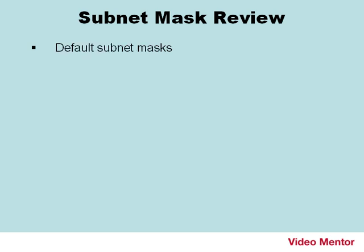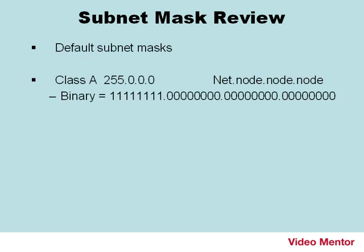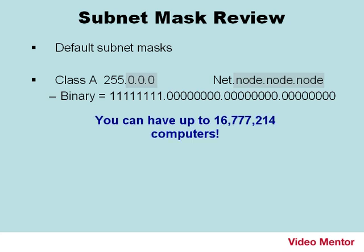Before we delve into subnetting, let's do some subnet mask review, namely default subnet masks. The Class A default is 255.0.0.0, and this tells us that the first octet of the IP address is the network portion, and the other three octets are the node or host portion. This is suitable for very large networks with a lot of computers.